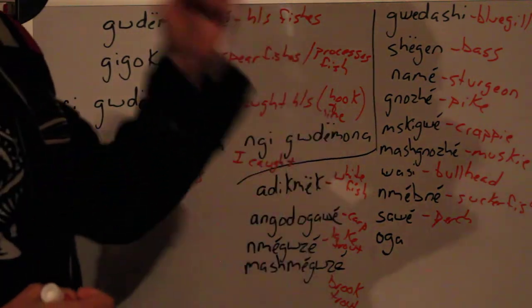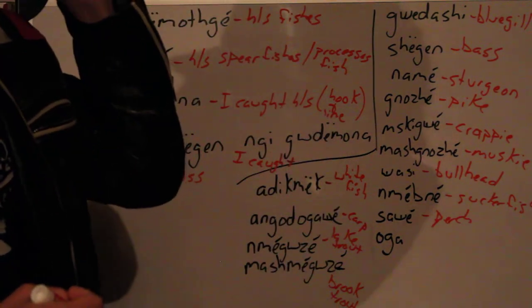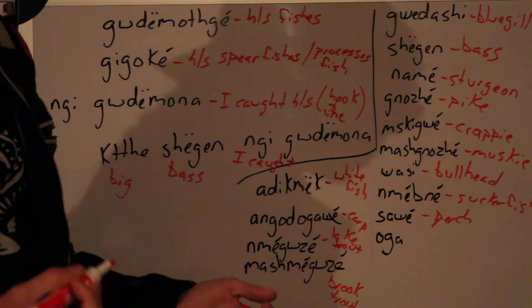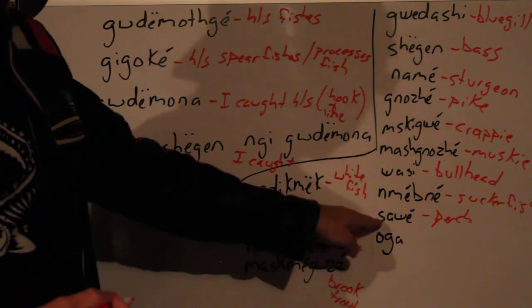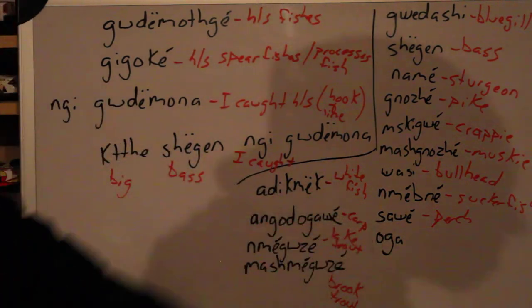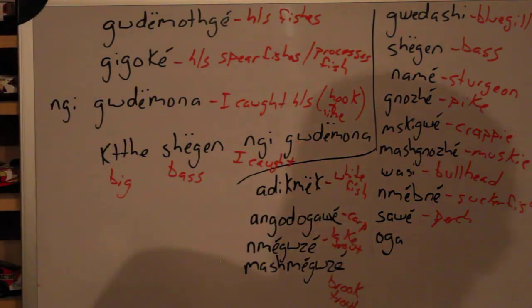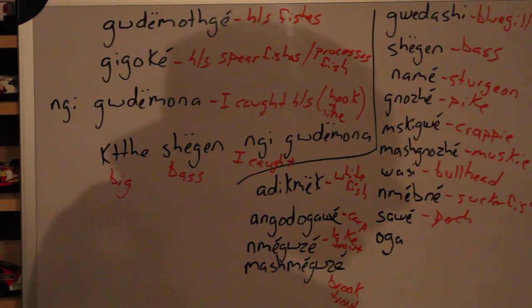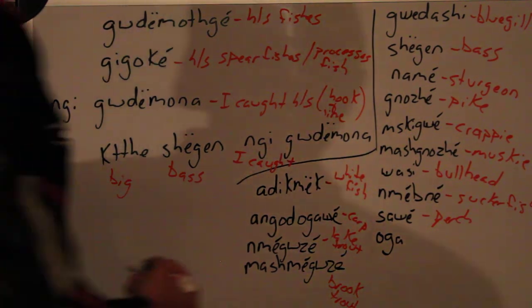Yellow perch. If you've seen our video on the colors, sawe means yellow — that's that same sawe right there. And the bottom one we have is oga — oga is a walleye.